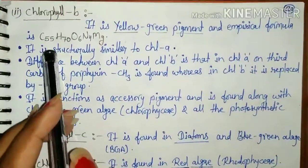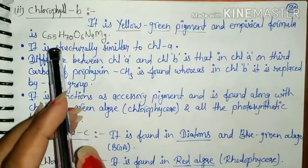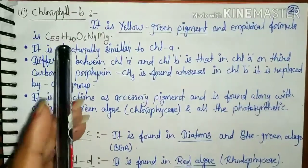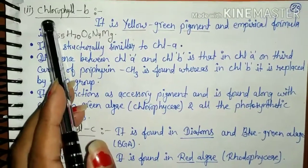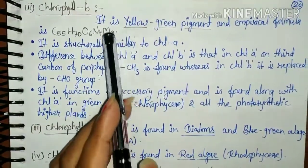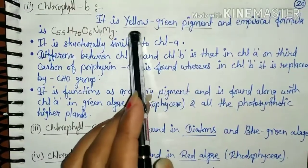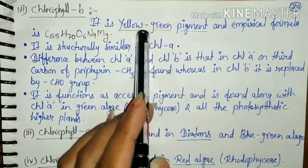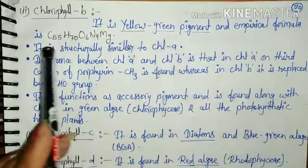Good morning students. Today we are going to talk about types of chlorophyll. The second type of chlorophyll is chlorophyll B. It is a yellow-green pigment, meaning it shows a yellowish-green color in the leaves.